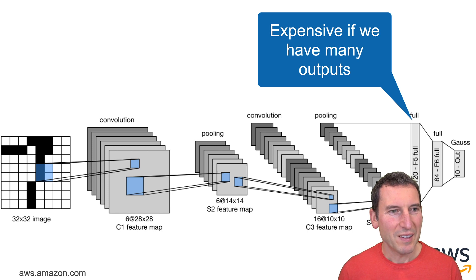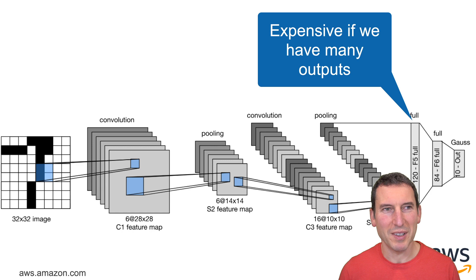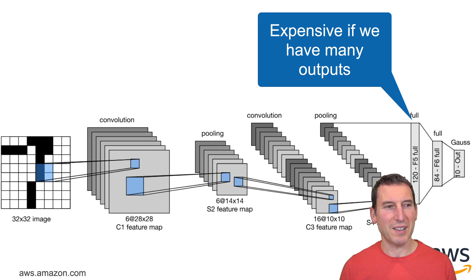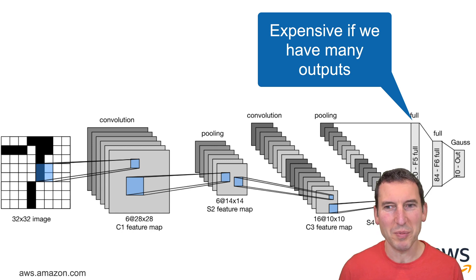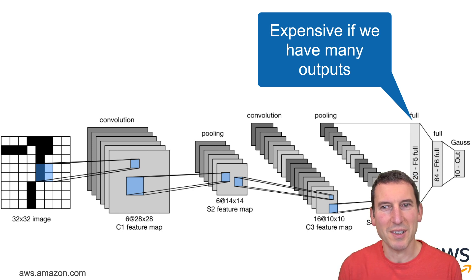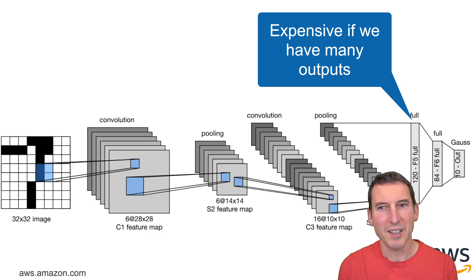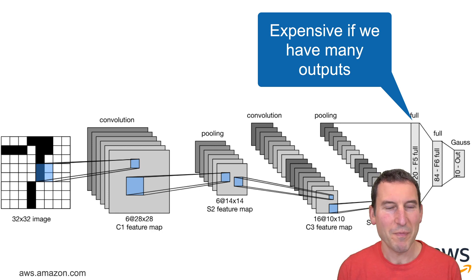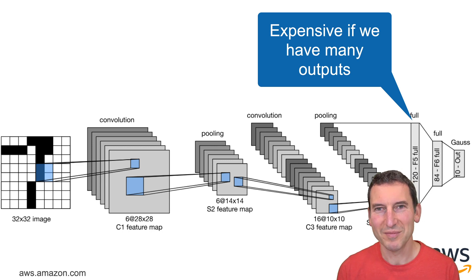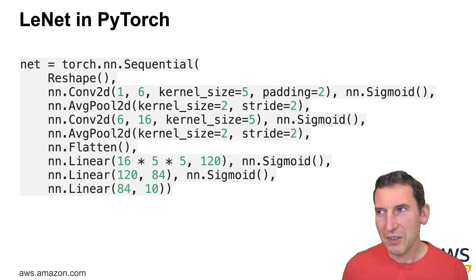That network was a little bit expensive to build if you had many outputs, but it actually worked really well. This is probably the best they could have built at the time given the computers available — these were SGI Octane workstations, beautiful blue computers that cost more than cars. Nowadays, it's trivial to implement this.